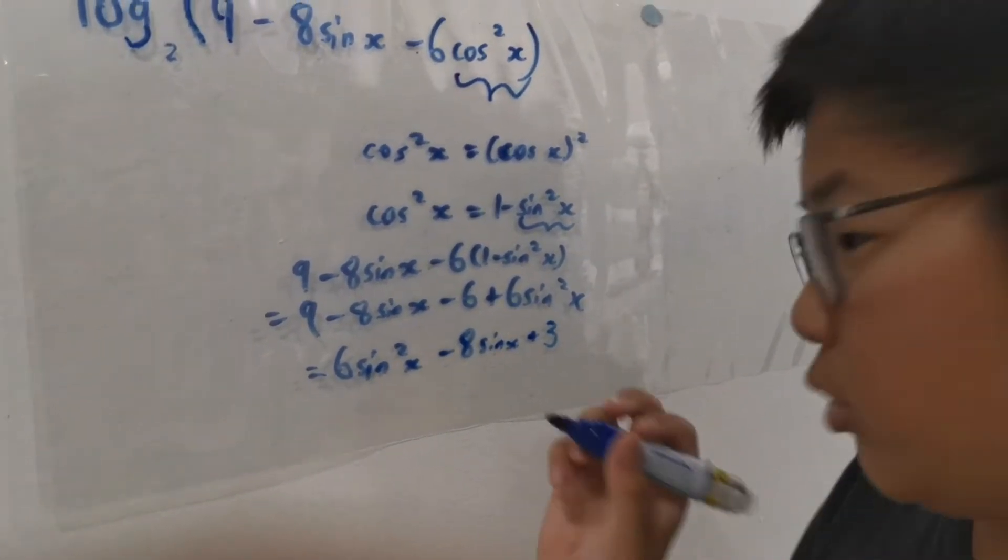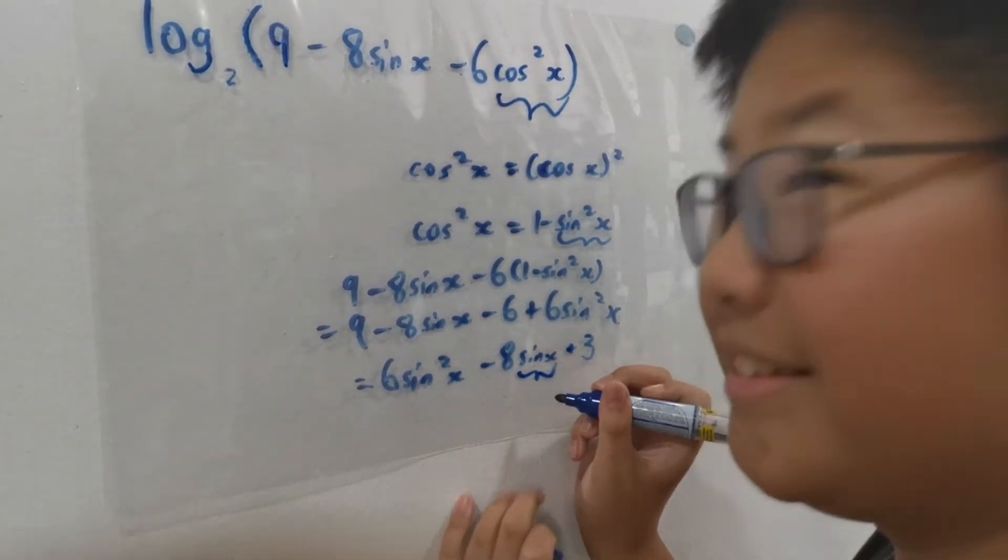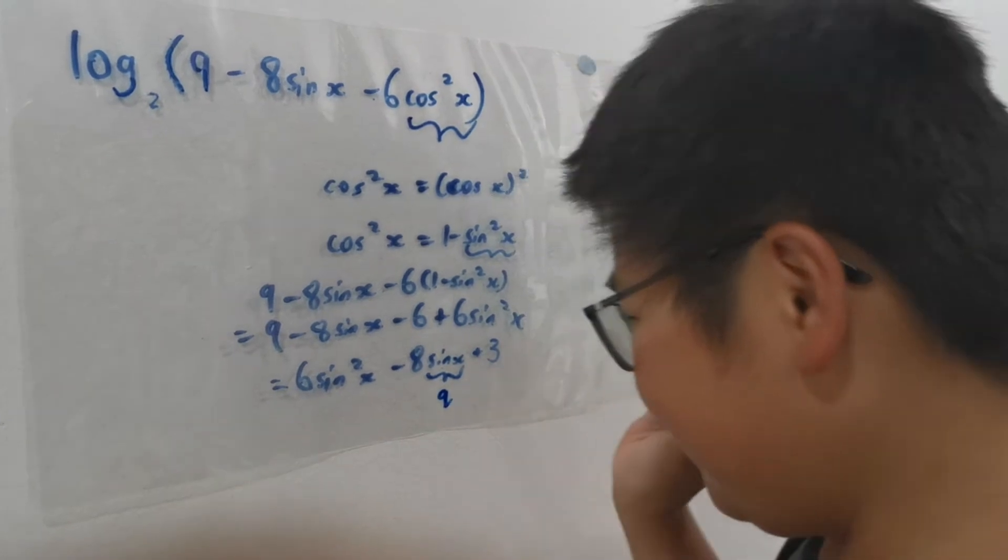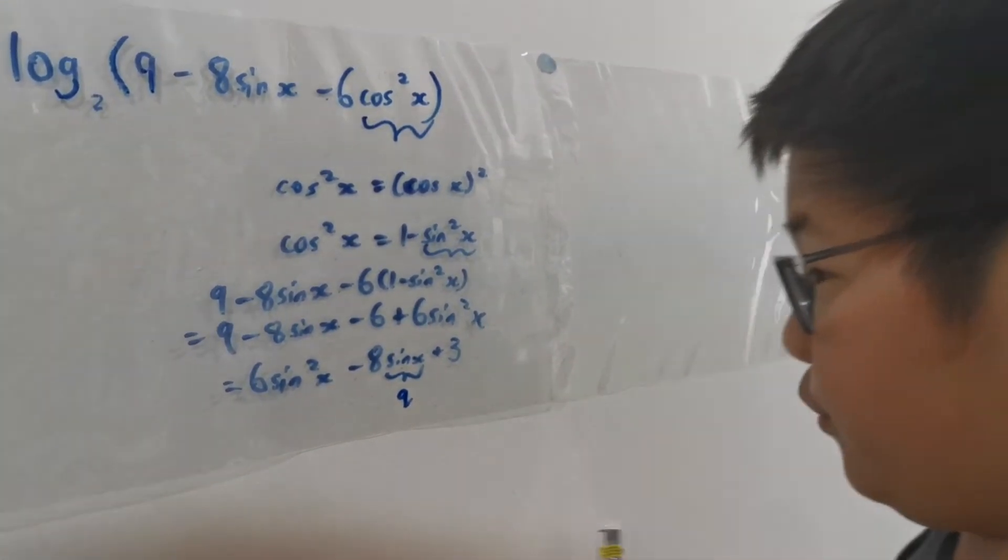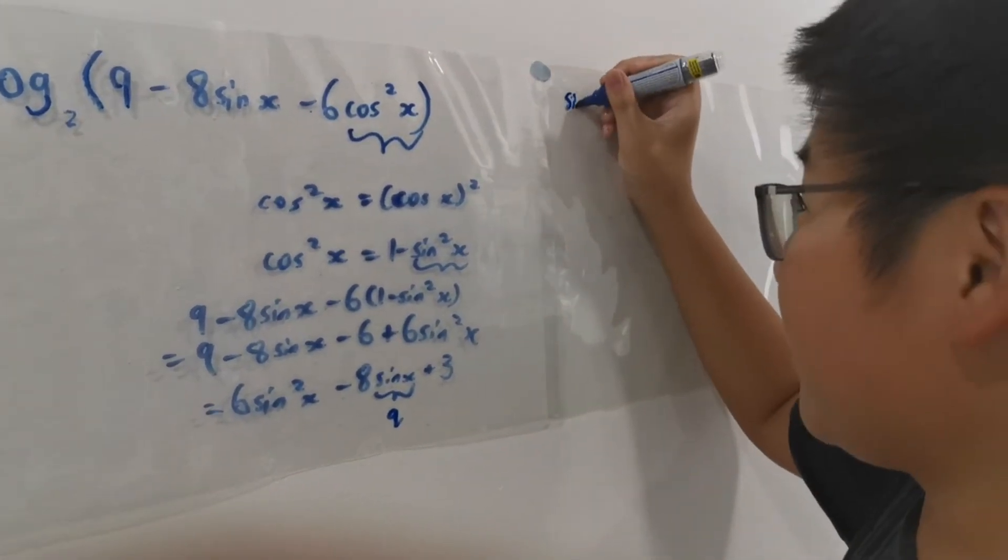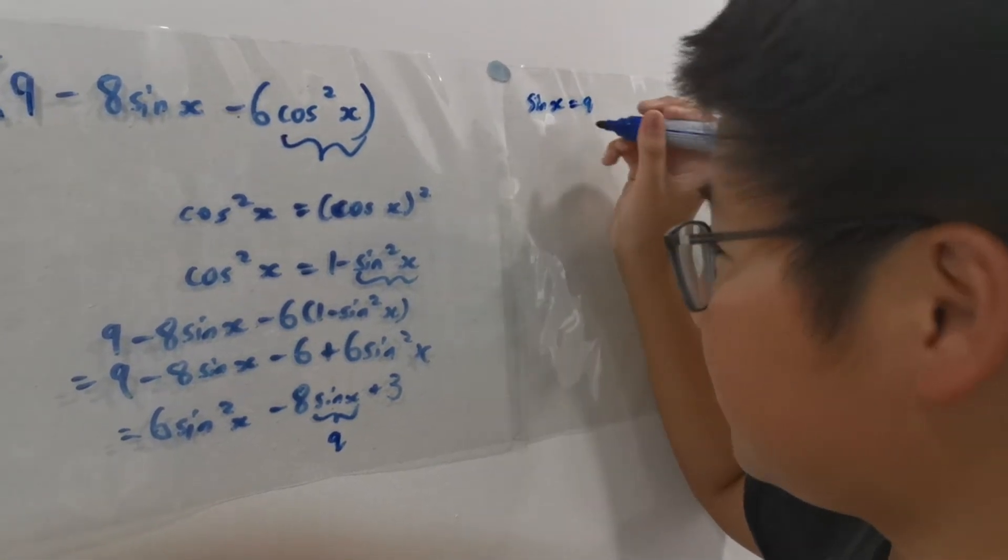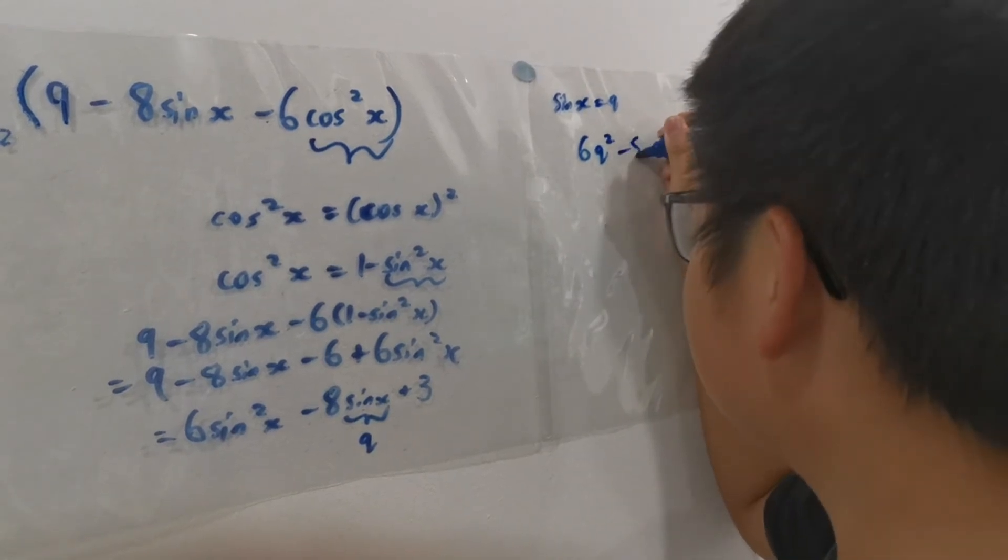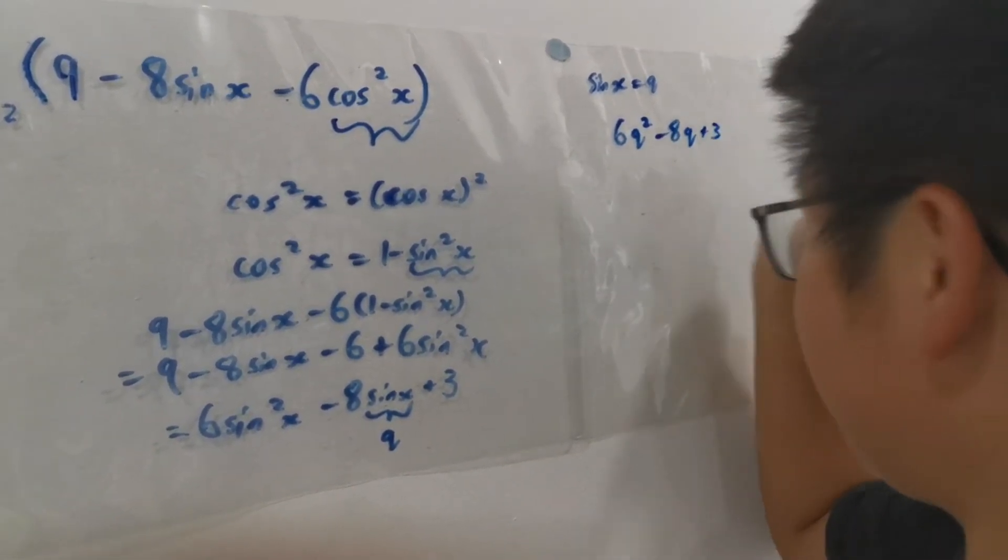We can express sine X as, say, another variable. What's your favourite letter? I'll say Q. We can put sine X as Q. We'll write this substitution here. So this expression now becomes 6Q squared minus 8Q plus 3.